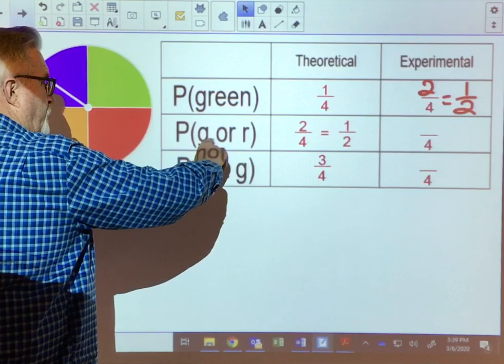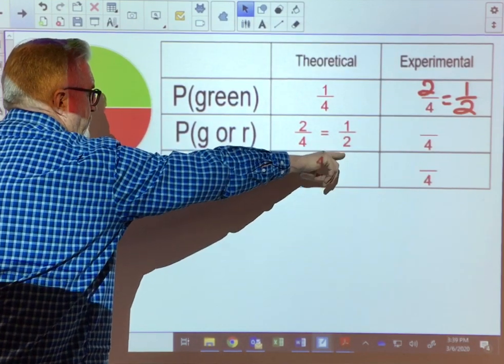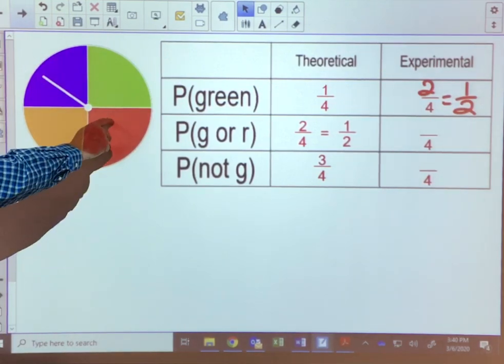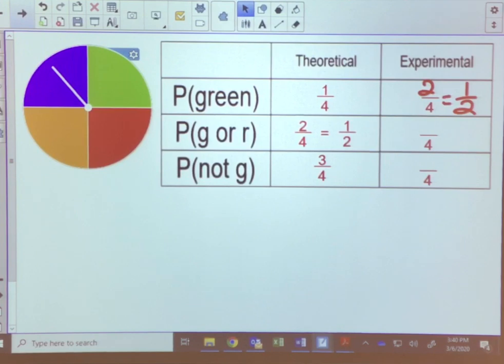So we got one every two times we spun the spinner, we ended up with getting a green. So on this one, probability of getting a green or a red, we came up with a probability of one half. So that means we've got a 50-50 chance. So let's spin our spinner, and the first time we get a purple. No winner there.